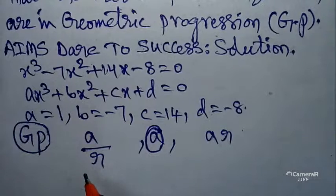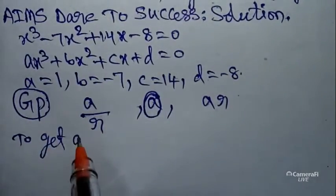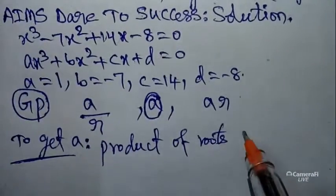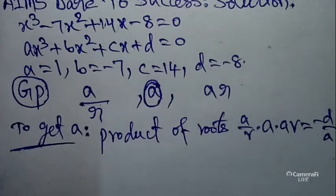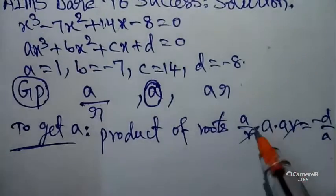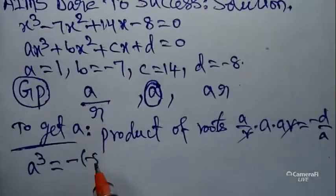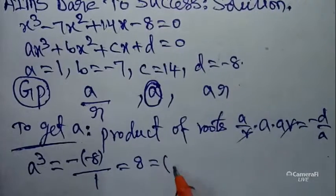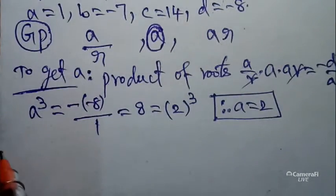In GP the common ratio is r. To get the value of 'a', use the product of roots formula. Product of roots: (a/r) × a × (a·r) = -d/a. The r's cancel, giving a³ = -(-8)/1 = 8. Since a³ = 2³, therefore a = 2.